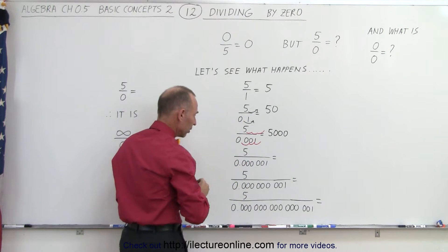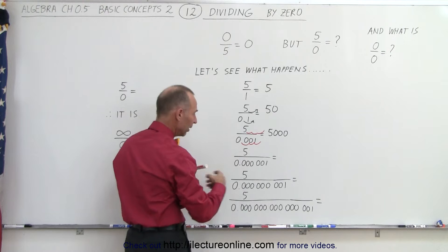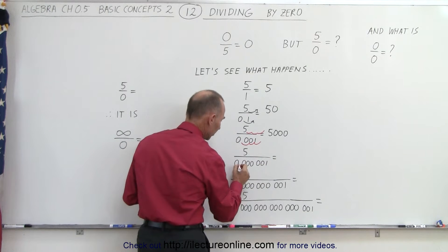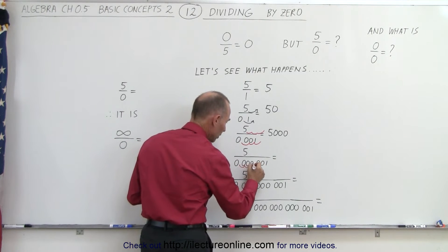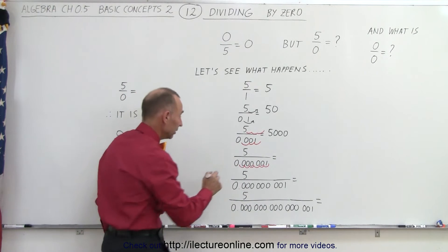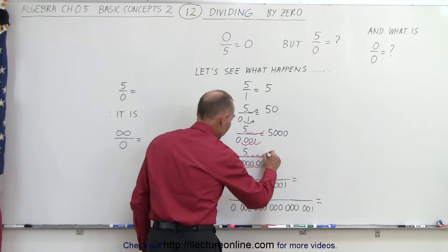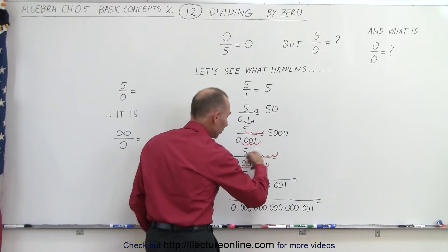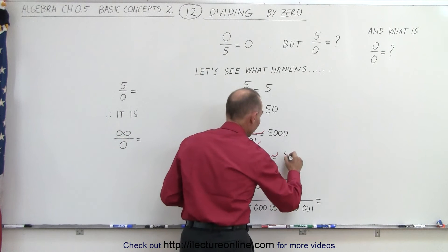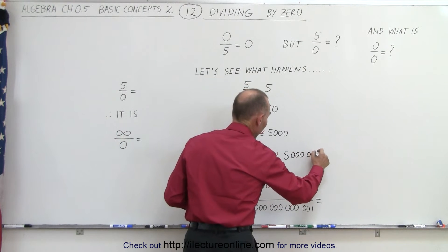When we take the number five and divide by 0.0001, to make the denominator into a one, we need to move the decimal place over six places, which means we need to do the same to the numerator — moving it over six places and leaving room for six zeros. That means this is a five with six zeros, or five million.